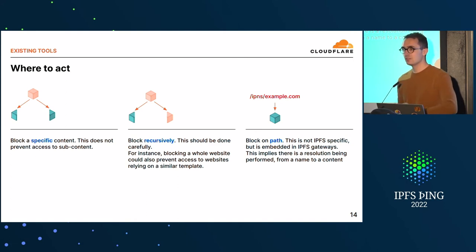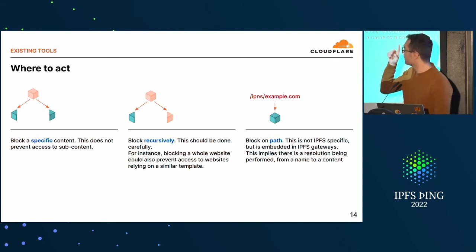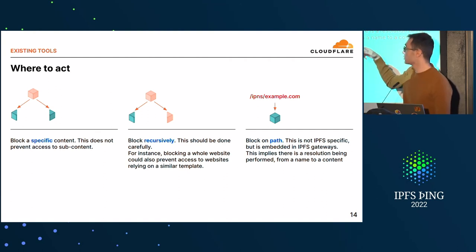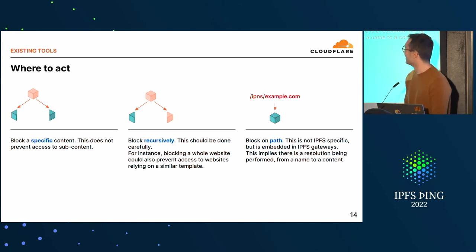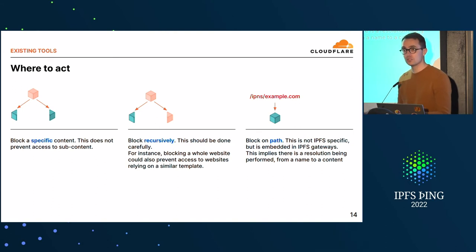Another thing not directly IPFS-related but more for the web: IPFS content is usually accessed through a multi-address, like IPNS slash example.com, and you can add a path like slash my-folder slash my-super-file. These paths require resolution. On the web, you can identify certain websites just by the URL — if it says it's a phishing website, you may want to block it just because it looks suspicious. That's another place where you can act: at the time of resolution, you may not even know which content address is associated but already know it's something you don't want to access.